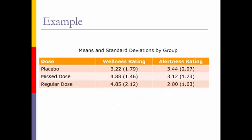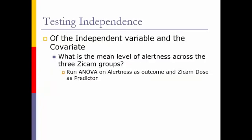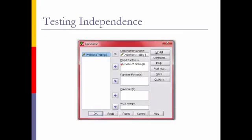Let's look at an example. We have means and standard deviations for the Zycam study - placebo, missed dose, and regular dose - and we're going to add a covariate: the alertness rating. What is the mean level of alertness across the three Zycam groups? We want to see whether our data is independent, so a good way to do that is to simply run a basic univariate ANOVA on alertness as the outcome and Zycam dose as the factor.